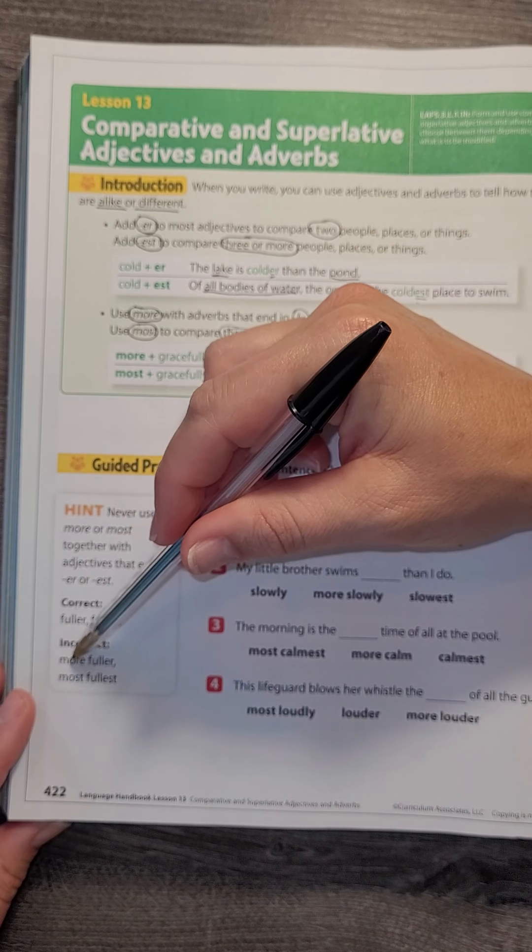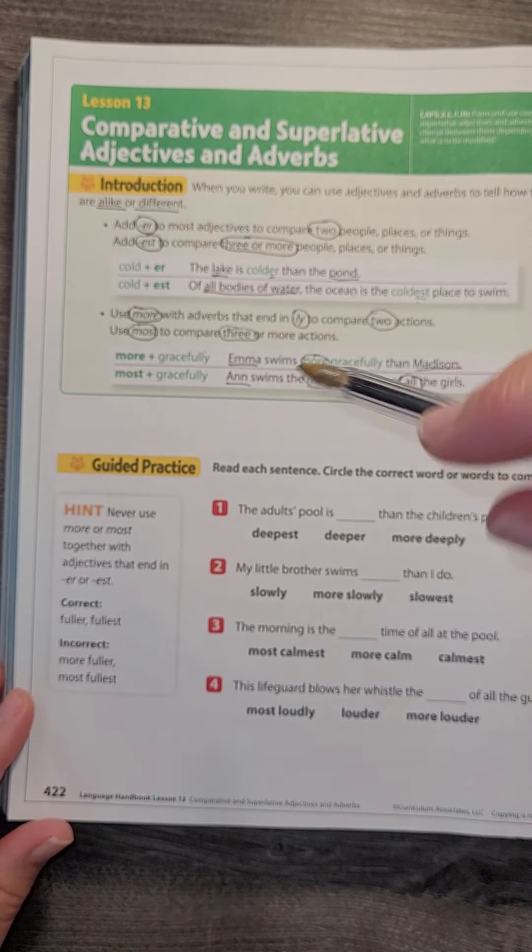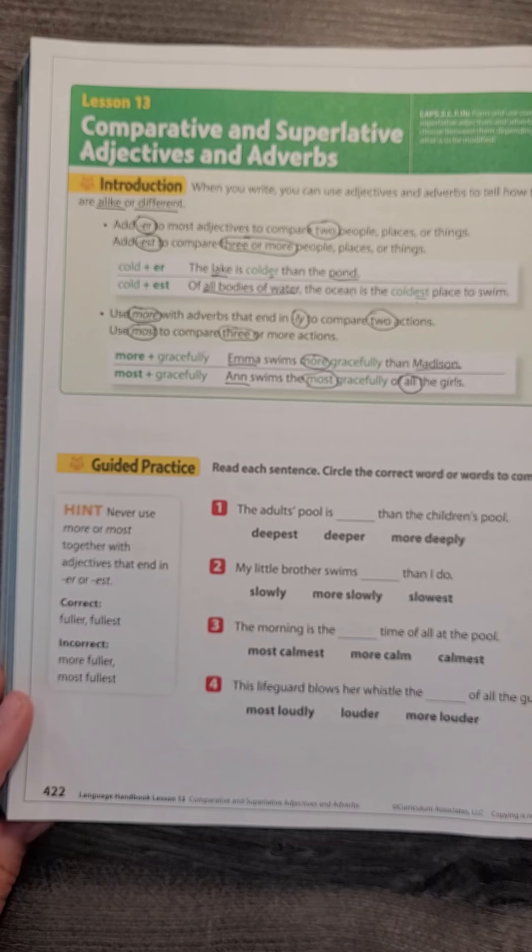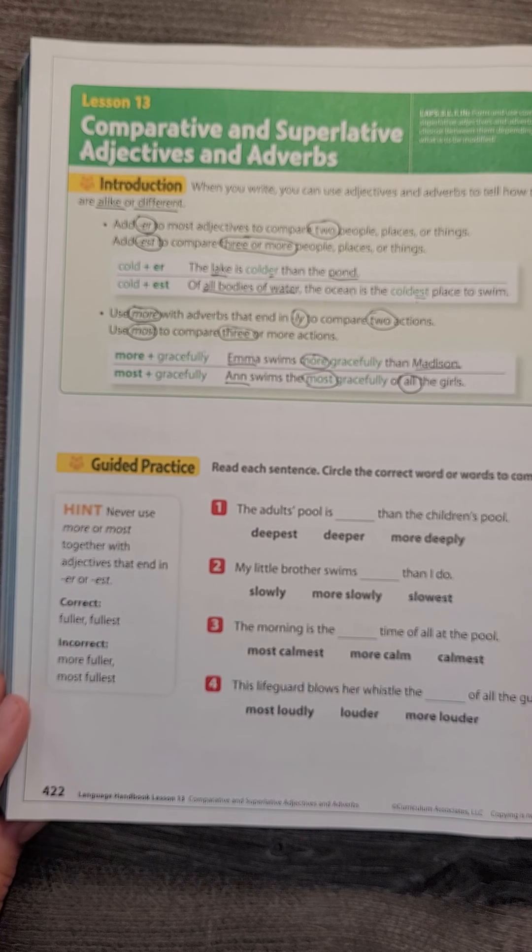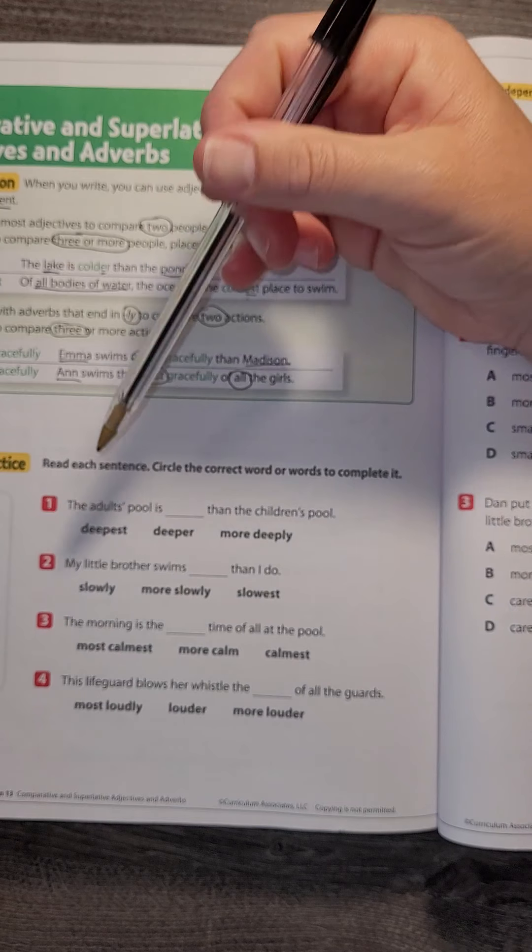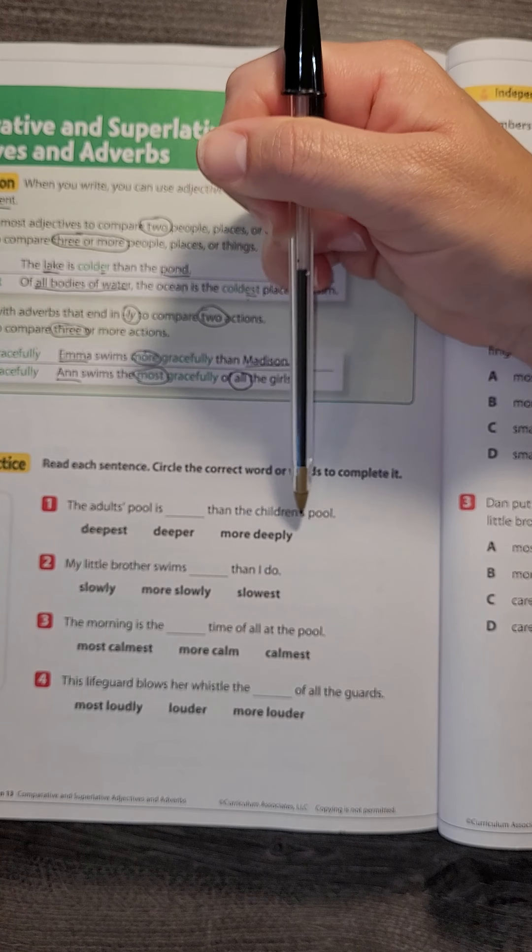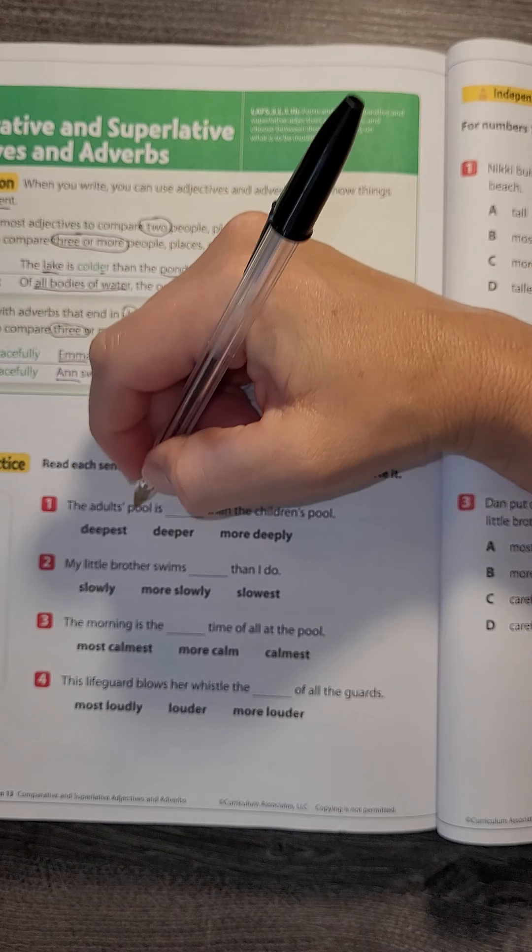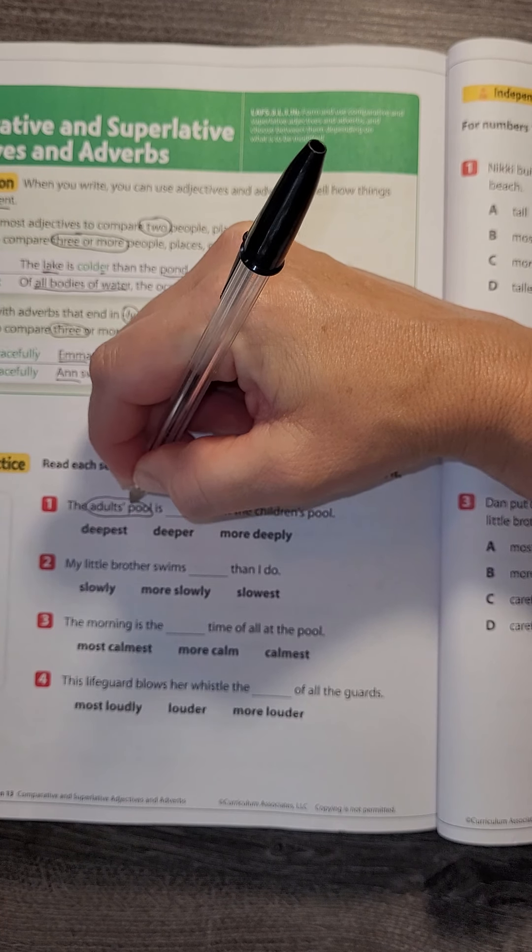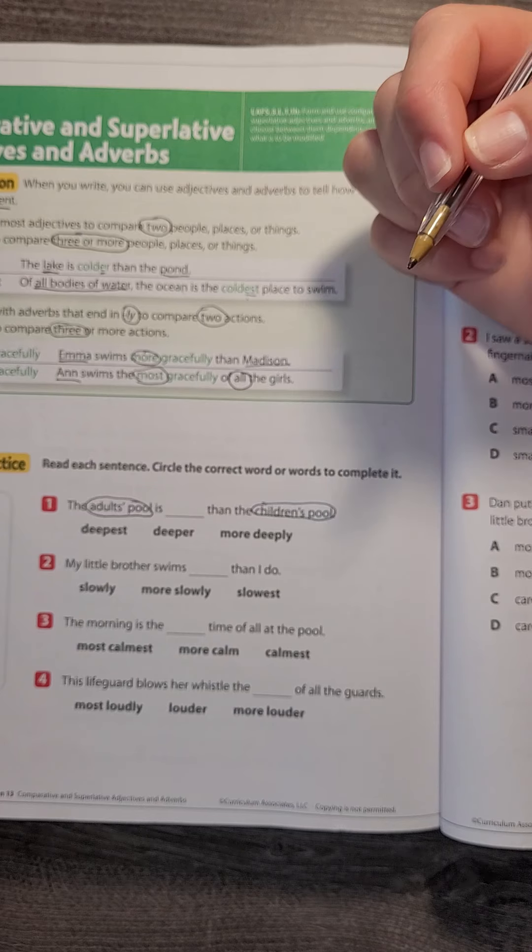We do not combine the 'more' and the 'most' with the -er and the -est. You use one or the other. All right, let's go ahead and look at our first sentence. The adult's pool is blank than the children's pool. So I'm comparing the adult pool to the children's pool—that's two.